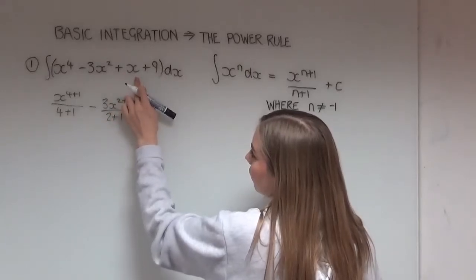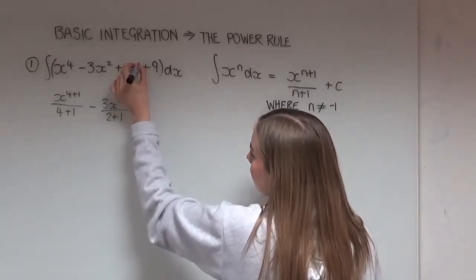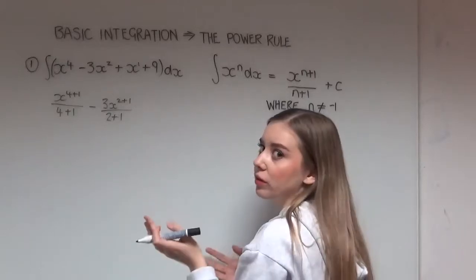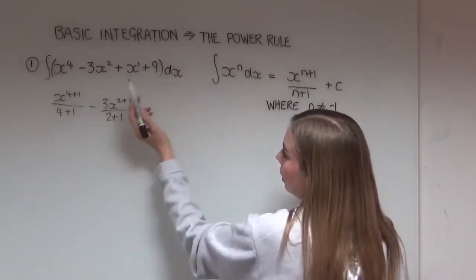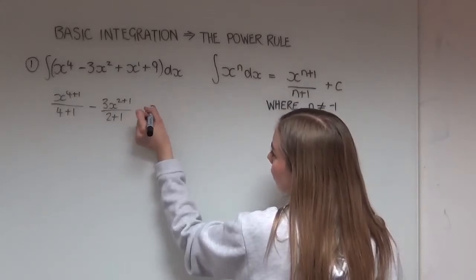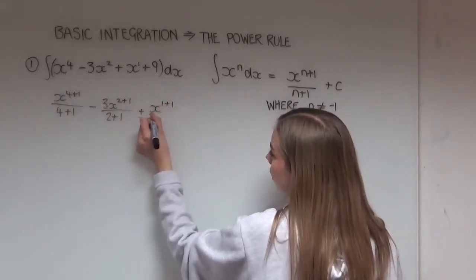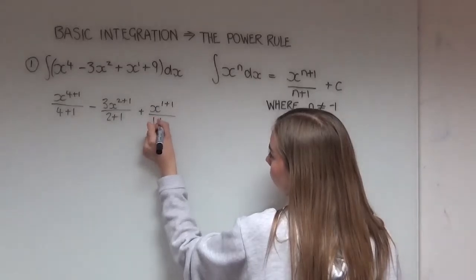Then here we have x on its own, and there's essentially a 1 there, because anything to the power of 1 is just itself. But if we think about it like this, n is 1. So we have plus x to the power of 1 plus 1, all divided by 1 plus 1.